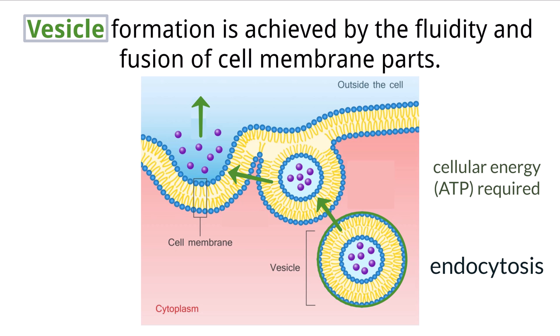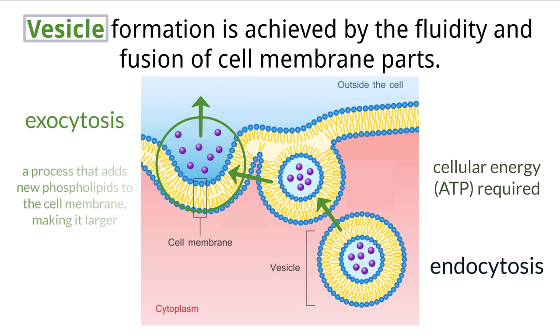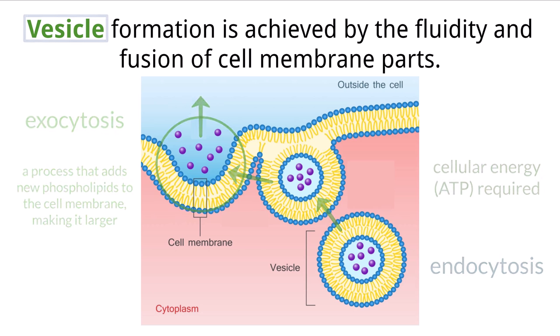In reverse, the cell can also expel waste products that are packed within vesicles to be moved out of the cell. The membrane of the vesicle will fuse with the larger cell membrane and push the components to the outside. This process also requires energy and is called exocytosis. The membrane of the vesicle will then permanently become part of the larger cell membrane, which is exactly how cells can grow the size of their membrane — by having vesicles fuse to add phospholipids.